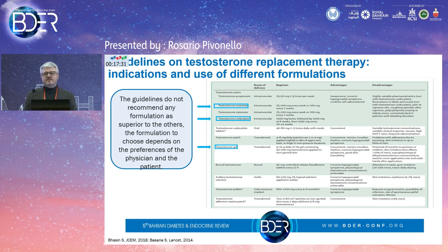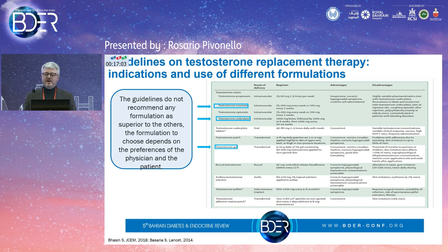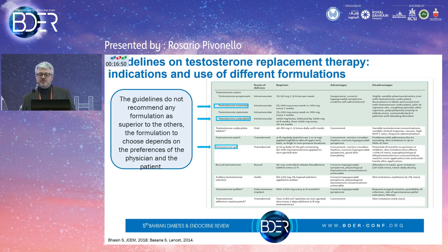Different testosterone formulations exist with different routes of administration. Intramuscular and transdermal forms are the most commonly used and must be adapted to patients given the advantages and disadvantages of each. Testosterone gel better mimics the circadian rhythm but carries a risk of transfer to partners or children. Intramuscular injections are less expensive, but are associated with fluctuations in mood and sexual function.